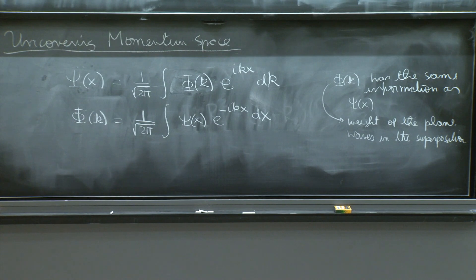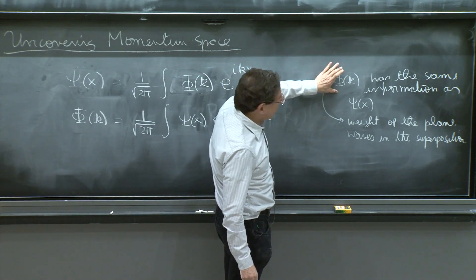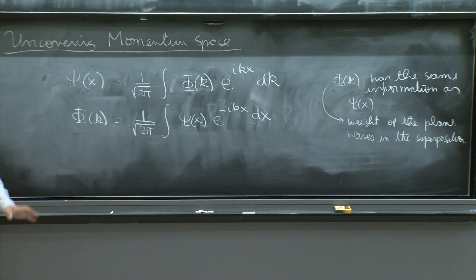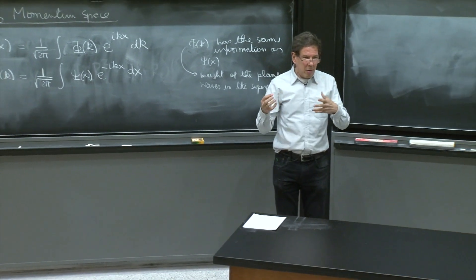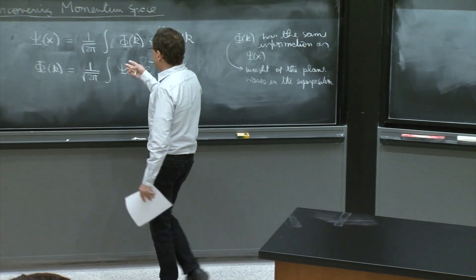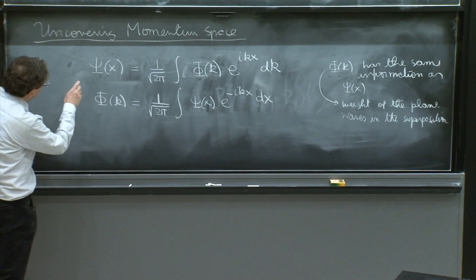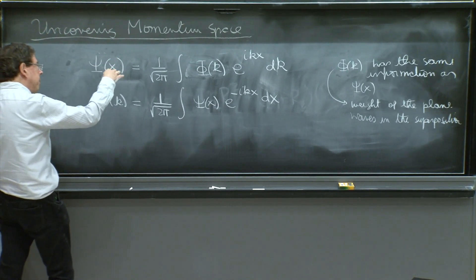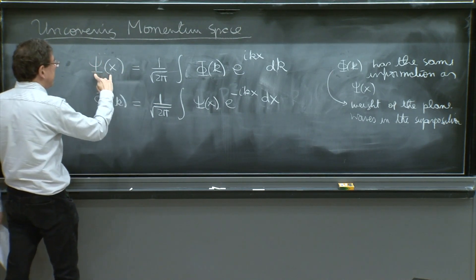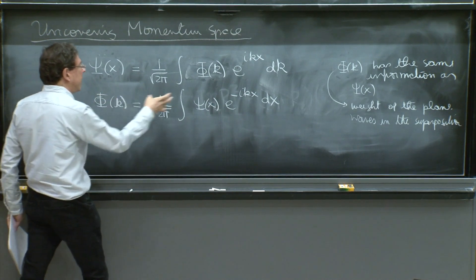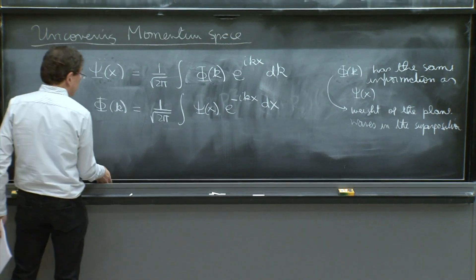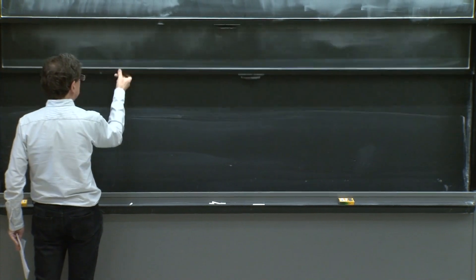One thing we want to do is to understand even deeper what φ(k) can mean. In order to do that, we need a technical tool. Based on these equations, one can derive a way of representing this object that we call the delta function. Delta functions are pretty useful for manipulating objects and Fourier transforms, so we need them. Let's try to obtain what is called the delta function statement. This is done by trying to apply these two equations simultaneously, starting with ψ(x) written in terms of φ(k), then substituting the value of φ(k).